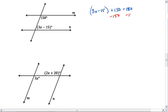Subtract 150 from both sides. We get 3x minus 15 equals 30. Now add 15 to both sides. 3x equals 45. Divide both sides by 3. And we are left with x equals 15.